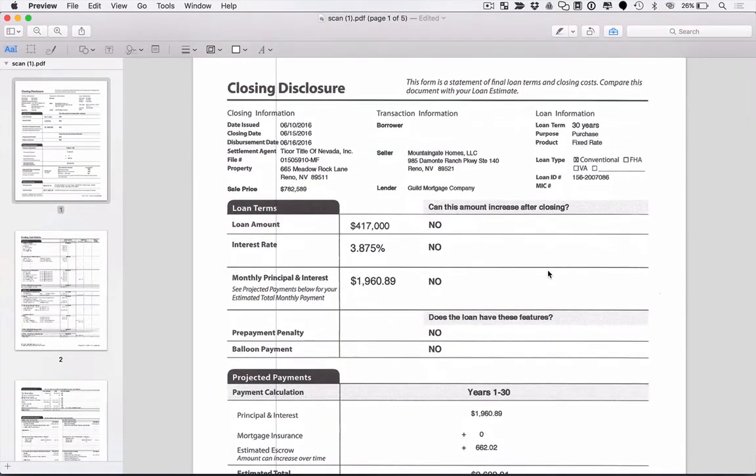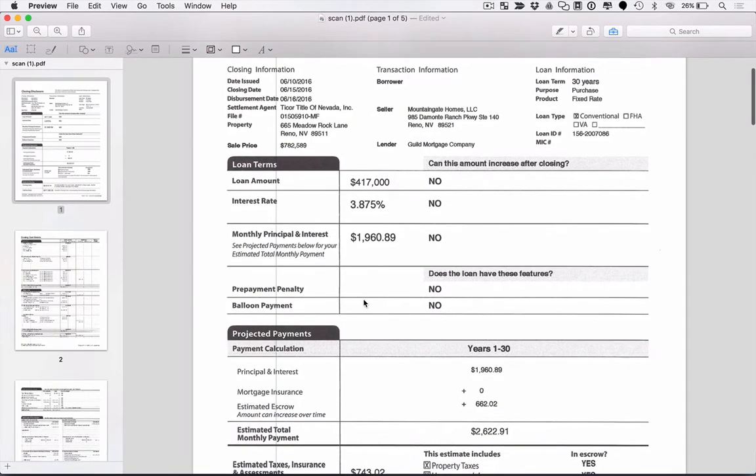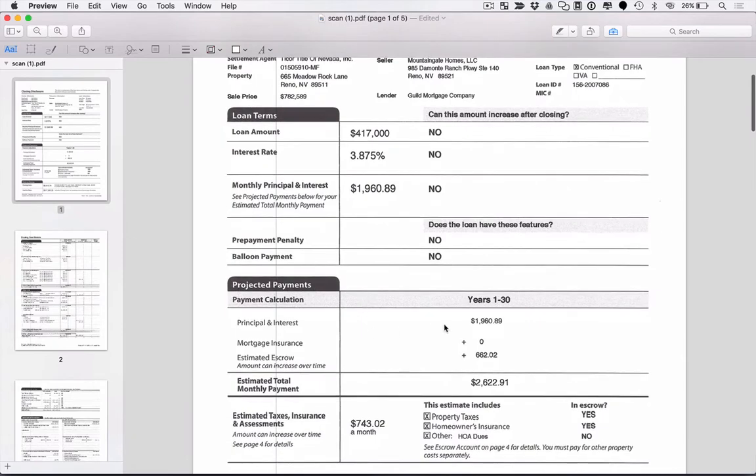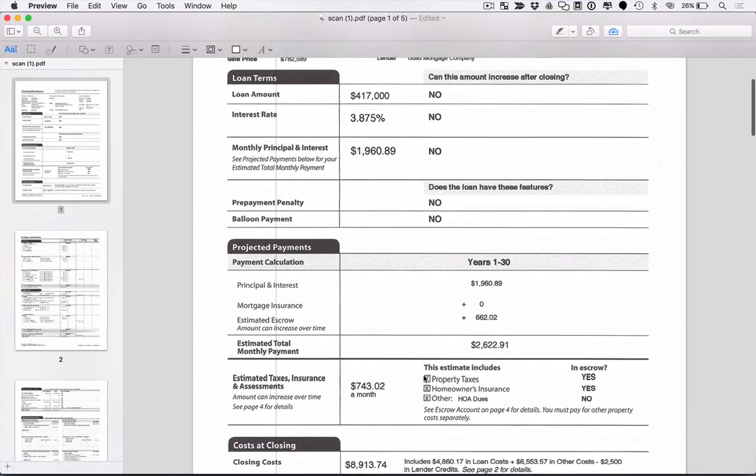Page one of the closing disclosure is very simple. It tells us our loan amount, our interest rate, and our estimated principal and interest portion of the payment. Then it goes into our principal and interest in addition to our estimated escrow. Now what's in our escrow? For this specific file, escrow includes property taxes and homeowners insurance. It does not include HOA dues. So that gave us a total payment of $2,622.91.